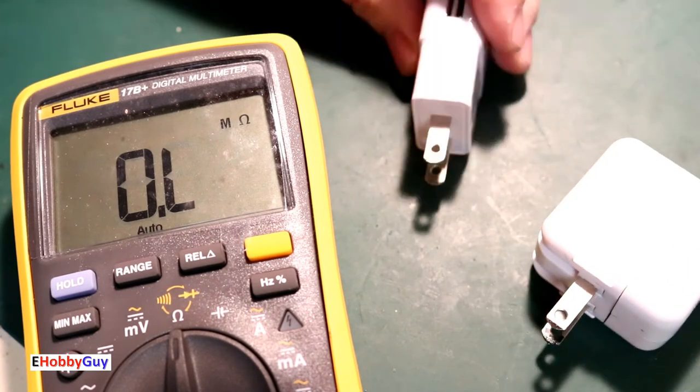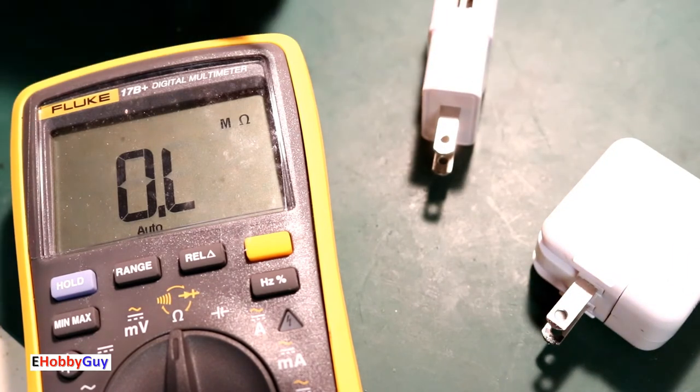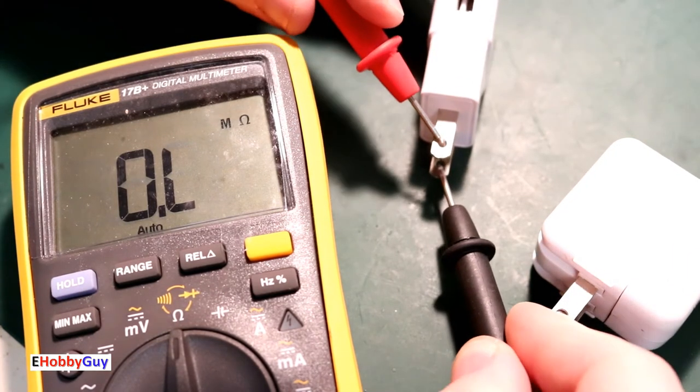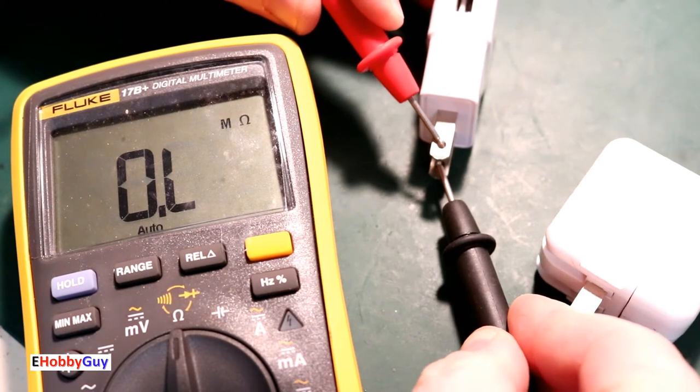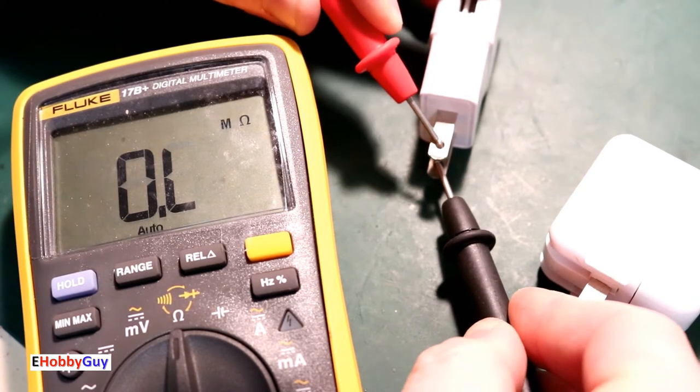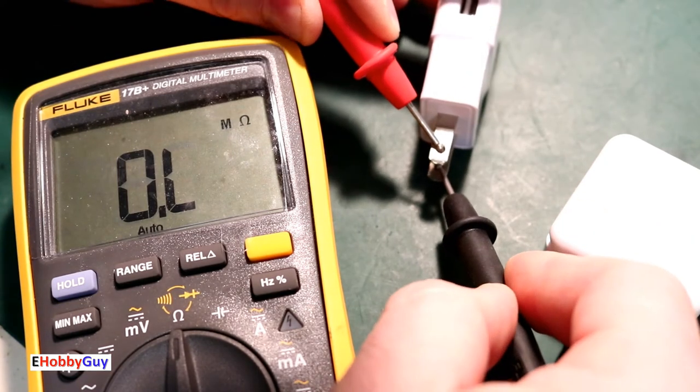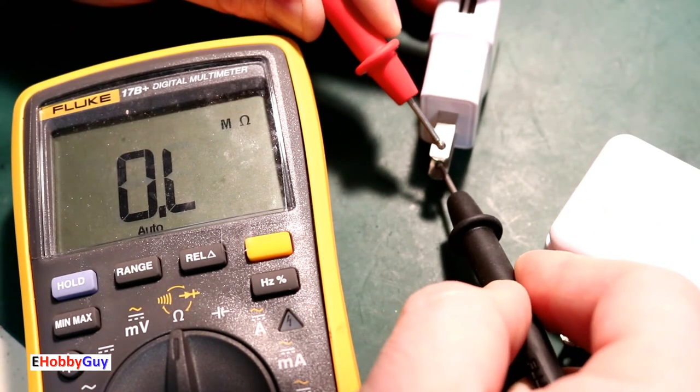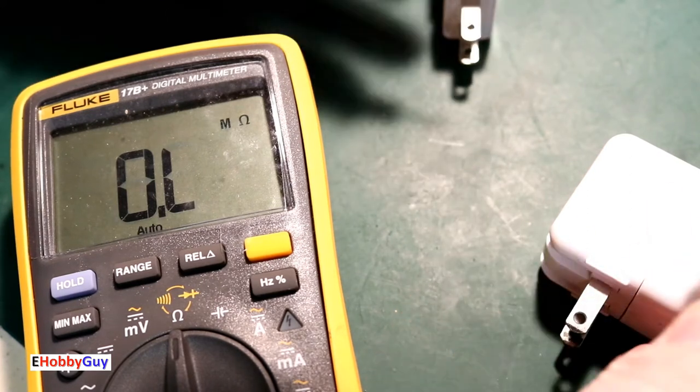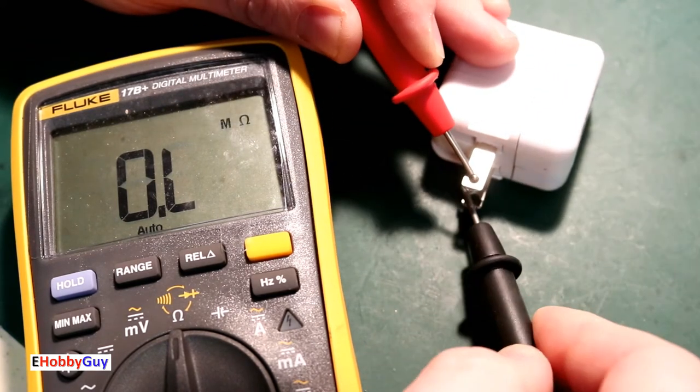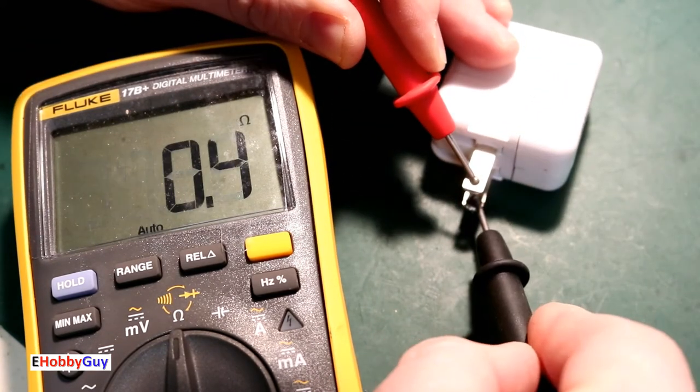Here is another one, so let's take a quick look at the resistance across here. You can see this is showing as an open, it is a very high impedance on the input coil of this transformer. That is what this one should look like, but instead we're getting a direct short.